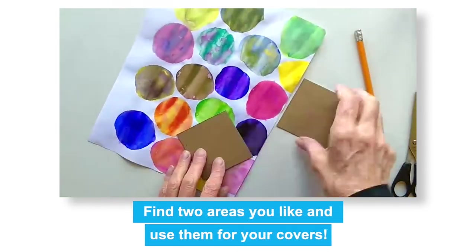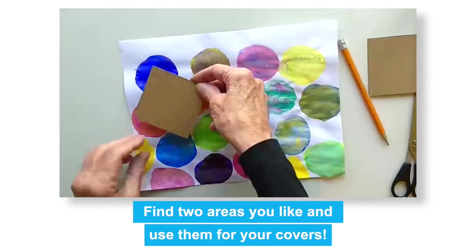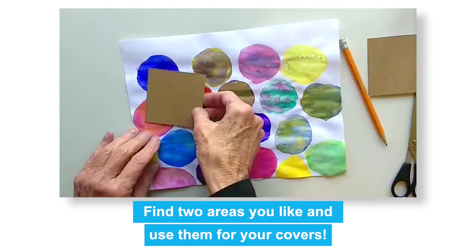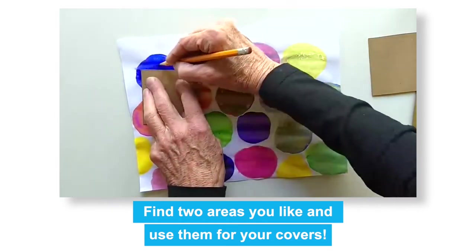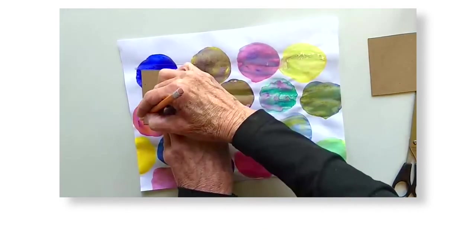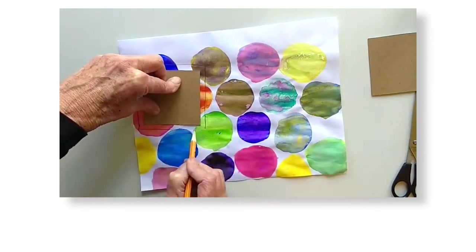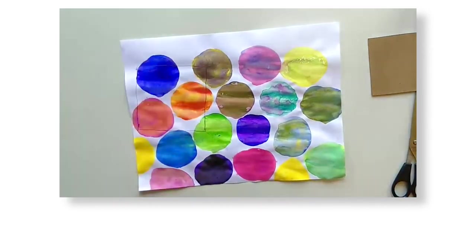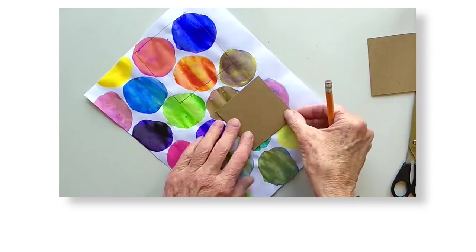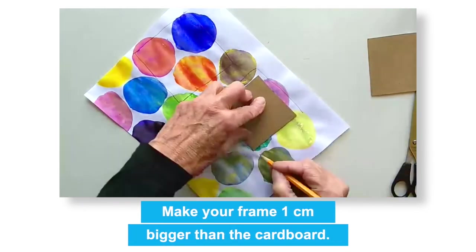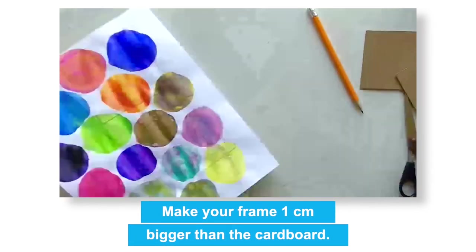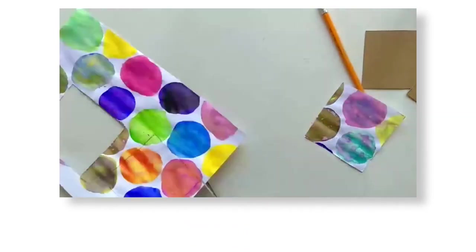Now we'll get the paper that we first painted on when we were experimenting with mixing colors. We'll be using this to cover the cardboard. Find two areas that you like the look of. Lay your pieces of cardboard over these areas and draw a frame that's bigger than the cardboard by about one centimeter on all sides. Cut them out.